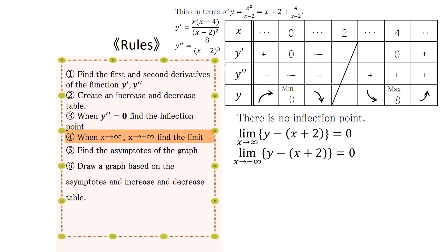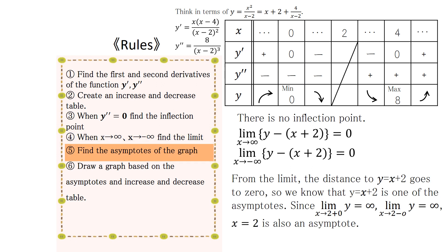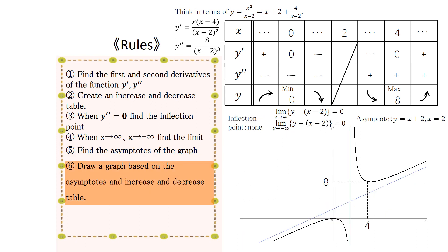Find the limit of y minus parentheses x plus 2 parentheses. Then consider the asymptote. Draw a graph based on the asymptotes and increase and decrease table.